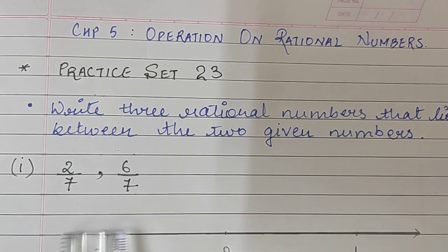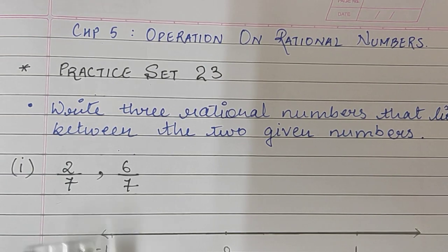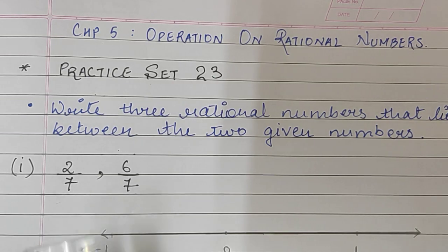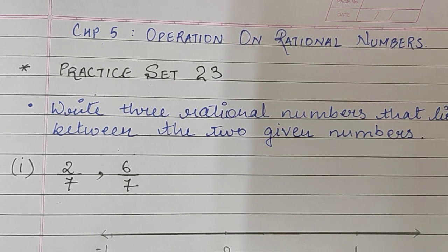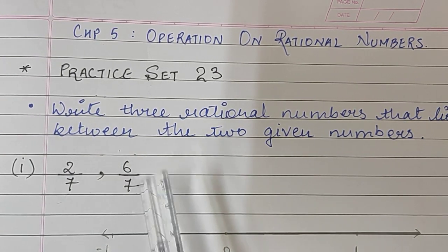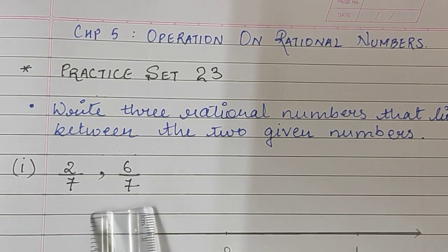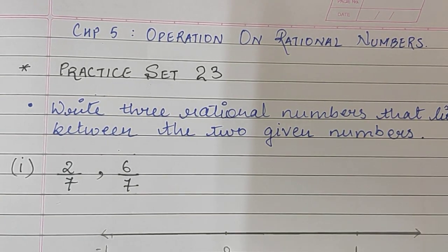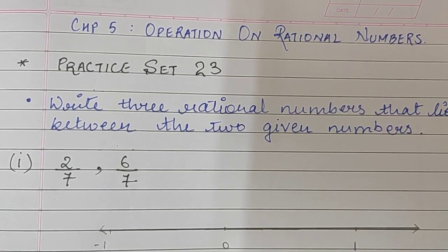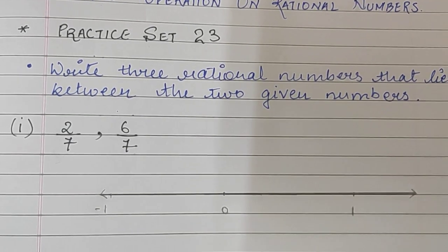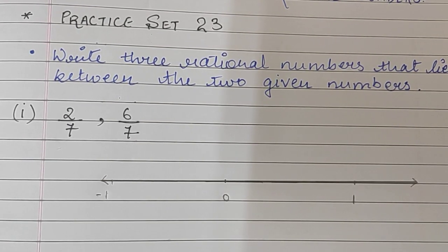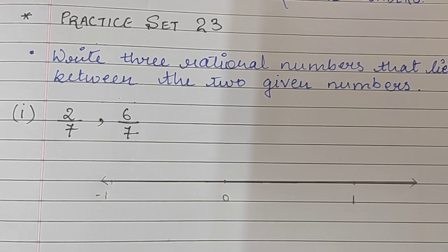But here the numbers are in fraction form, and in this video I will teach you how to find rational numbers between fractions. The first important thing we need to know is that the denominators have to be equal, so that we can find the number between them very easily. Let's understand how we are going to find the numbers in between these 2 fractions with the help of a number line.